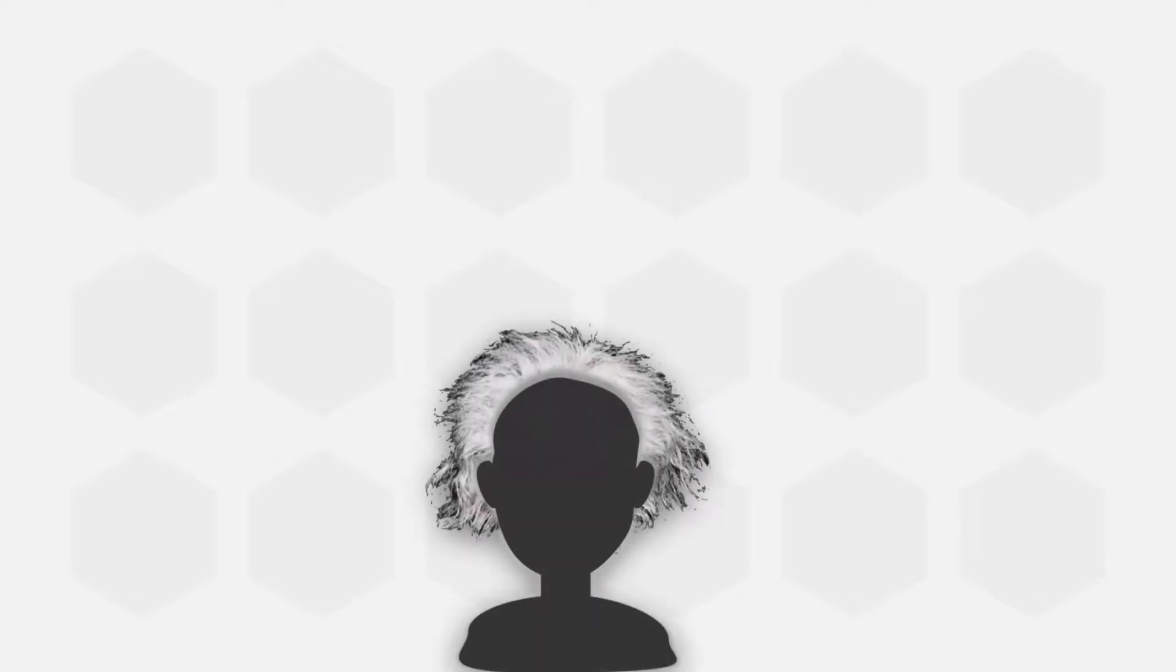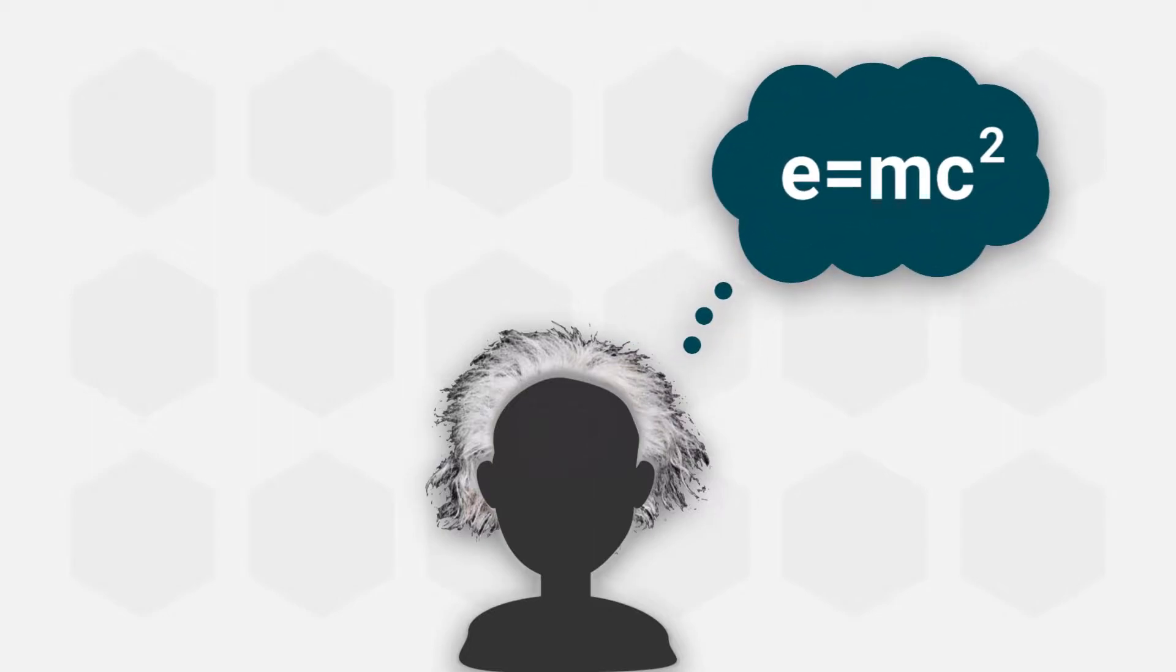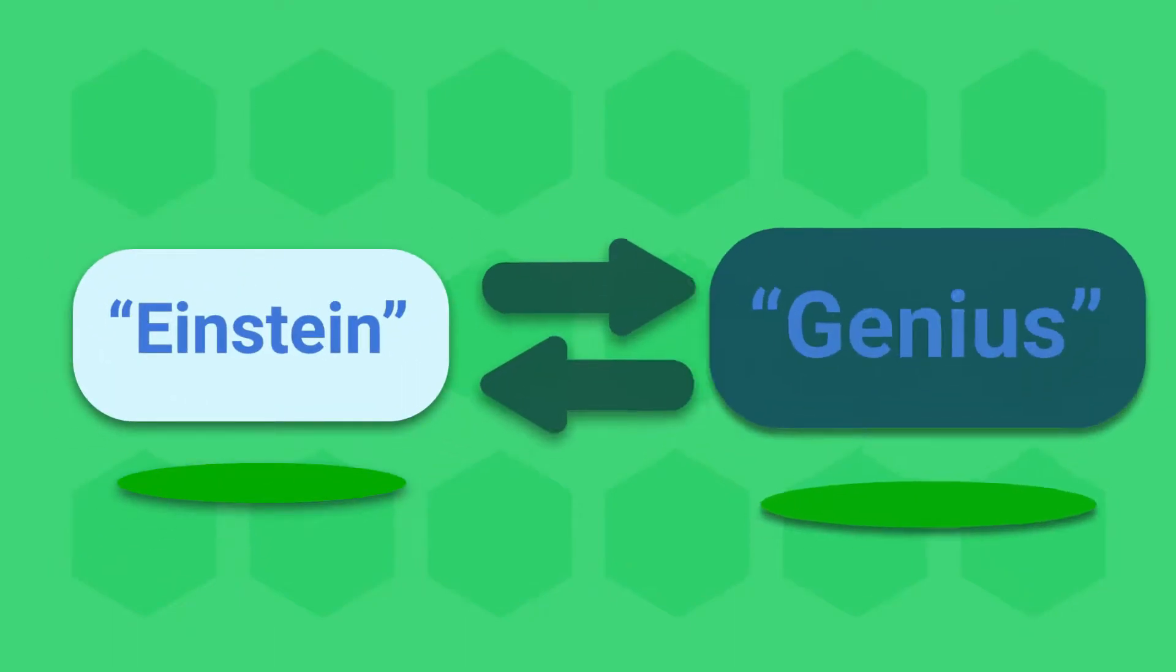When we think of Albert Einstein, we immediately think of his crazy hair. We also think of him as a one-of-a-kind genius that made many groundbreaking scientific discoveries, such as the famous equation E equals mc squared. In fact, he has made such a big legacy that we often use the word Einstein as a synonym for the word genius.